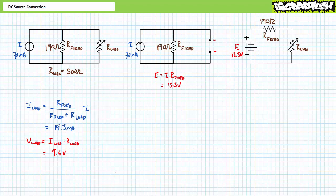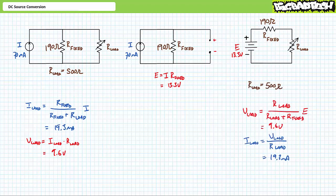With the load resistor set at 500 ohms, we know the incoming current and both resistances in a parallel combination. An application of the DC current divider rule demonstrates current through the variable load resistor set at 500 ohms will be 19.3 milliamperes. For the substitute configuration, we know the applied voltage and both resistances in a series combination. An application of the DC voltage divider rule demonstrates voltage across the variable load resistor will be 9.6 volts, and a subsequent application of Ohm's law confirms current through the load will be 19.3 milliamperes.